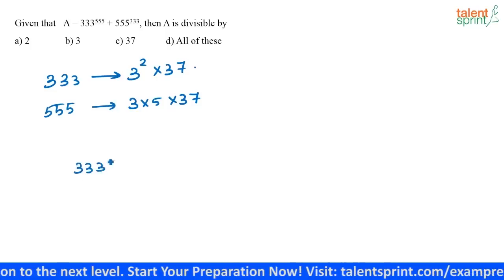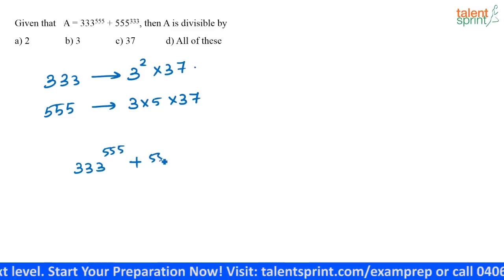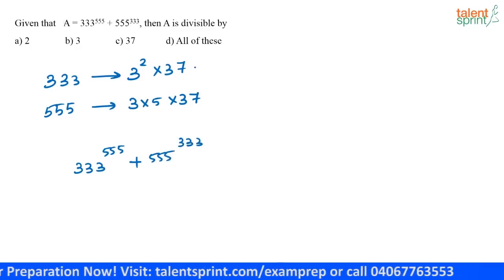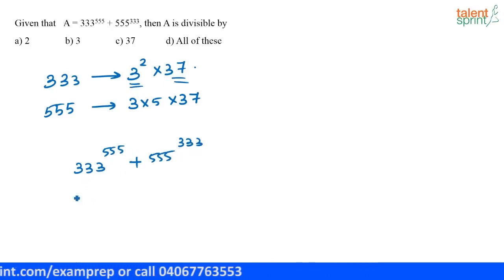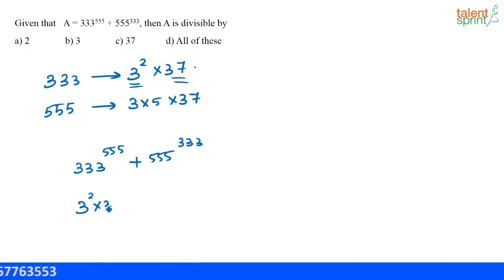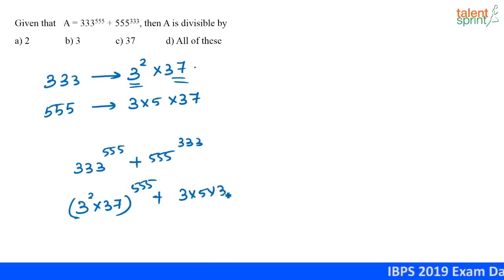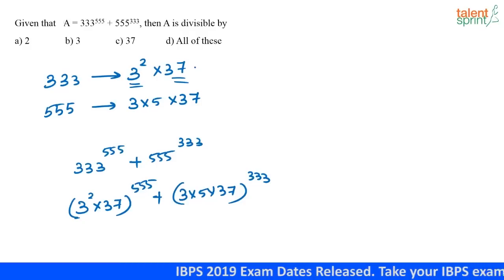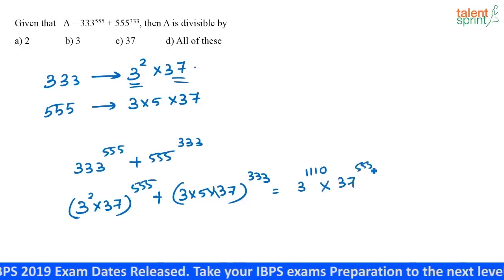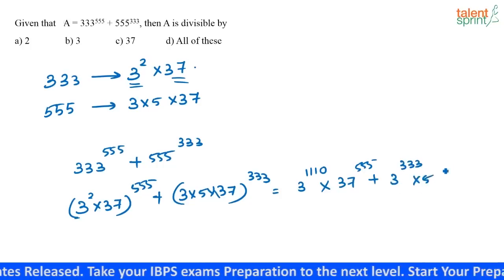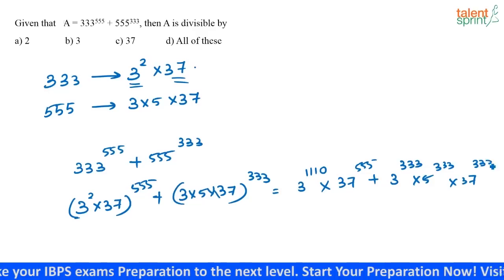When I find out the value of 333 to the power 555 plus 555 to the power 333, if I write it in terms of its factors, it is nothing but 3 squared into 37, whole to the power 555, plus 3 into 5 into 37, whole to the power 333. Expanding, this is 3 to the power 1110 into 37 to the power 555, plus 3 to the power 333 into 5 to the power 333 into 37 to the power 333.